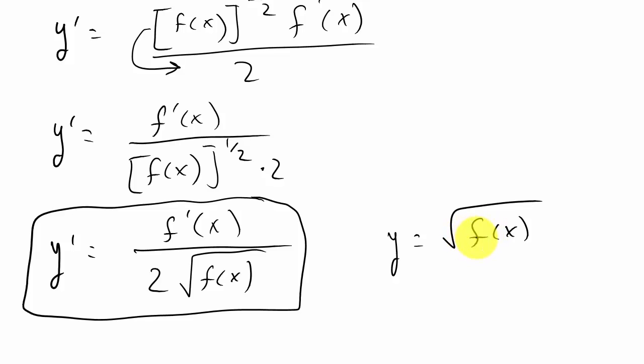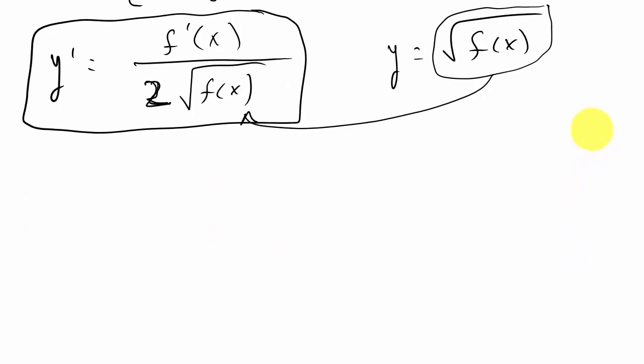So all we have to do is whenever we're taking the derivative of the square root, all we do is take this square root of f(x) and write it in the denominator times two. So all it is in the denominator, it's two times whatever this is.